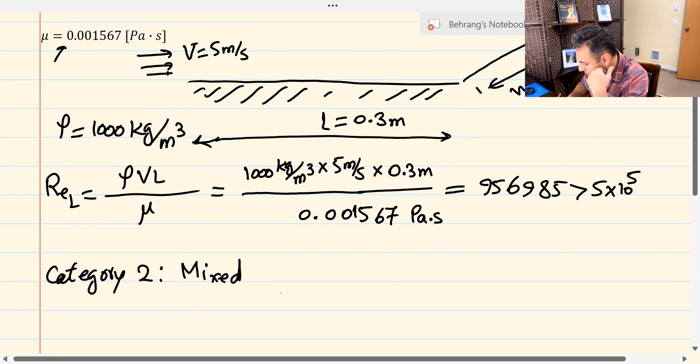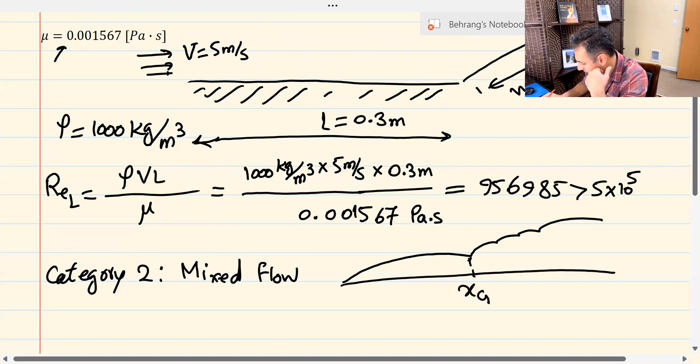Category two is mixed flow. Mixed flow is when you have the boundary layer at the beginning is laminar, but at some point at X critical, it turns into turbulence. So you have a combination of both. So you're going to pass through X critical, and L is here. L is bigger than X critical in this case. If you wanted to calculate X critical, you can, but it's not necessary for this problem. We have the value of Reynolds number.